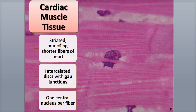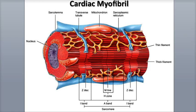And like skeletal muscle fibers, cardiac muscle fibers are striated, having the same organization of thick and thin filaments, and the same sarcomere structure, with the same zones and bands, as skeletal muscle sarcomeres.